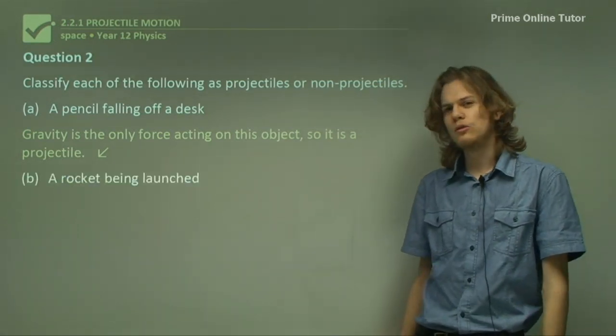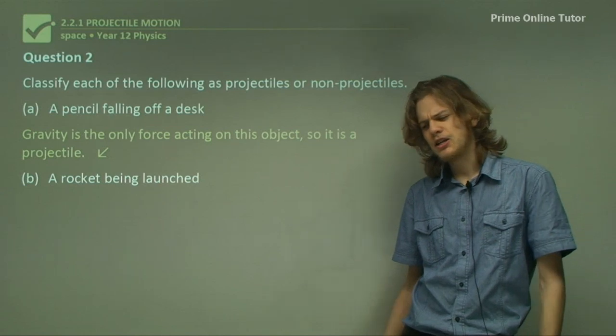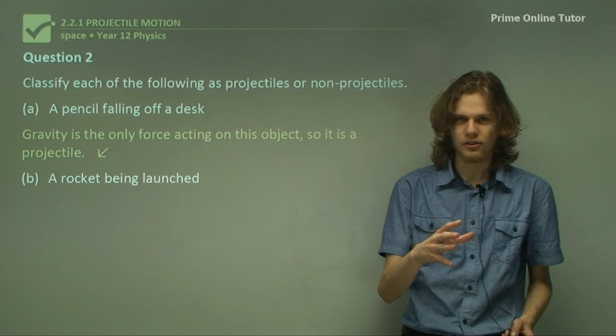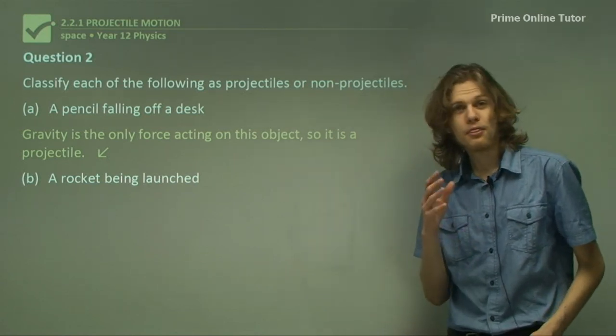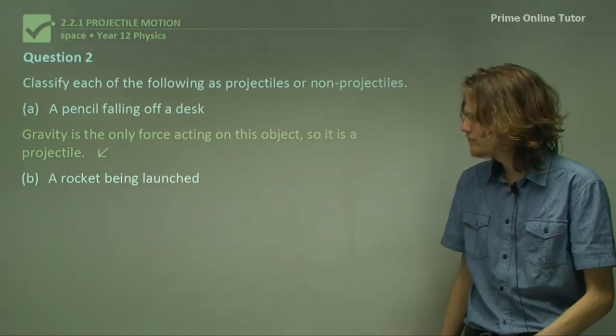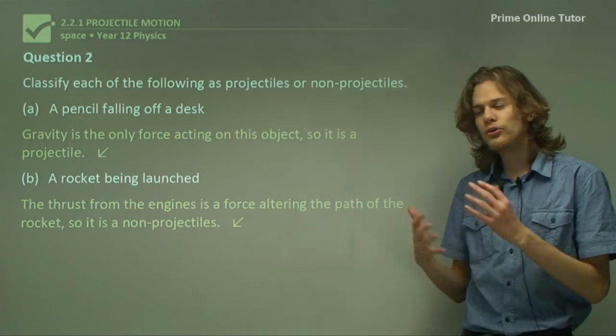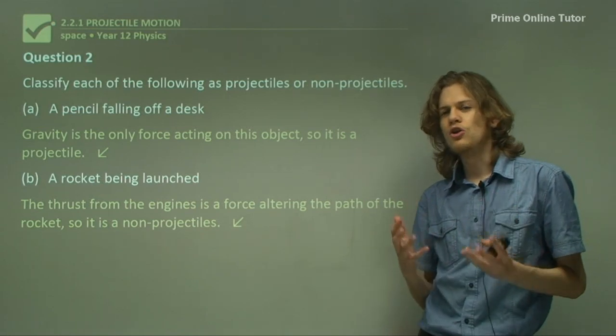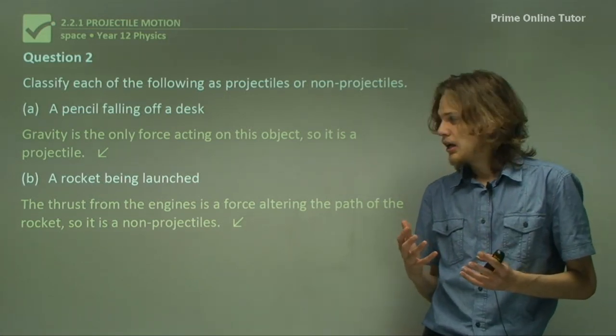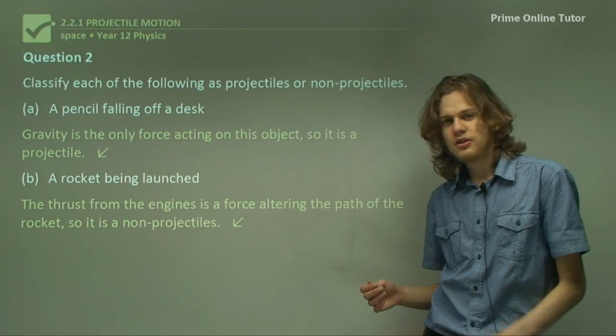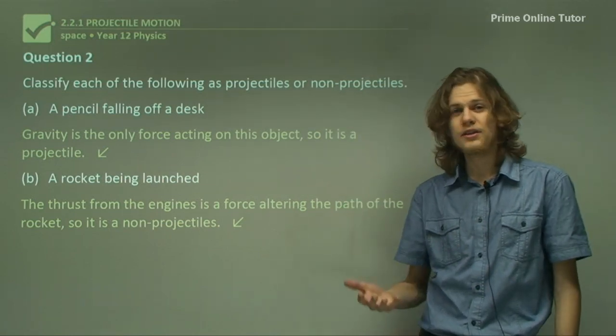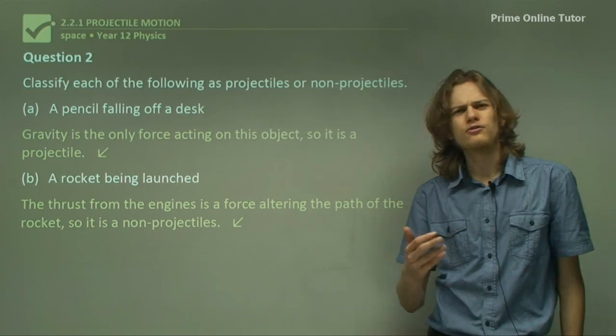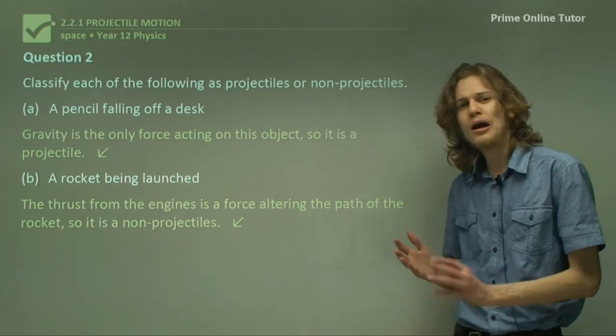B: a rocket being launched. Now let's see, we have gravity acting on it, and it's in mid-air, which is good, but that's not the only force acting on it. We also have thrust. So the engine is a force that alters the path of the rocket, so it's a non-projectile. If we were to shut off the engines completely, such as if it was halfway to the moon and we didn't need the engines anymore, then it would become a projectile as it flies from the earth to the moon, completely unpowered.